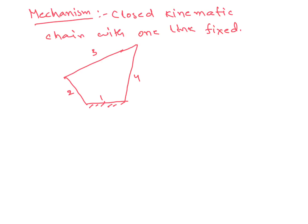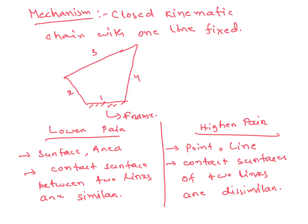A mechanism is a closed kinematic chain with one link fixed. For example, in a four-bar mechanism, link one is fixed and is called the frame of the mechanism. If we fix link 2 while other links are free, we get an inversion. Fixing link 3 gives another inversion, and so on.